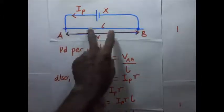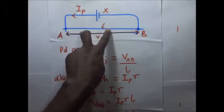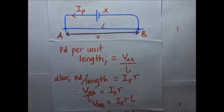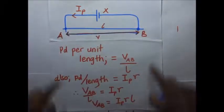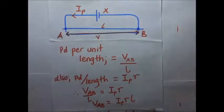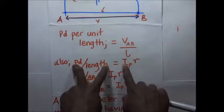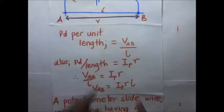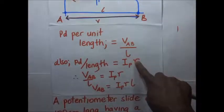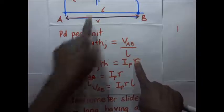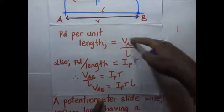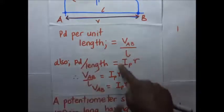Since the resistance of the whole wire is uniform throughout, we can find the resistance per unit length of the wire. If we know the resistance per unit length, another way of finding the PD per unit length is using V = IR: PD per unit length equals the driver current IP times the resistance per unit length R. We get the resistance per unit length by dividing the total resistance of the wire by its total length.